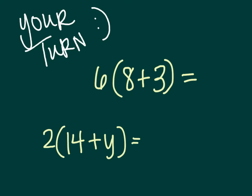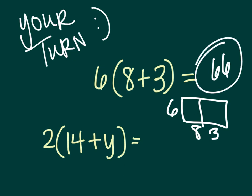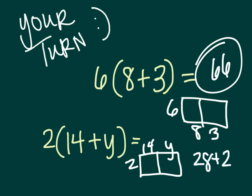All right, here we go. This one, box method, six goes on the outside, eight and three are on the inside. When you distribute, is what it's called, you're going to end up with an answer of 66. This one, here's your box method, two goes on the outside, 14 and y are on the inside of your box, if you will, and your final answer then will be 28 plus 2y. You could also flip-flop the order and say 2y plus 28. Either way is correct.